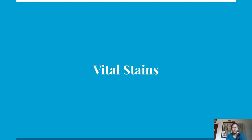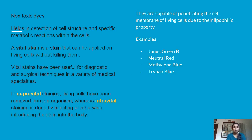Welcome dear students to another session of Histological Staining Techniques. In this session we will be discussing about vital stains. Vital stains are known as toxic dyes that help in the detection of cell structure and specific metabolic reactions within the cells. A vital stain is a stain that can be applied on living cells without killing them. For the time being, we can view the structures inside the living cell — that is the purpose of using vital stains.